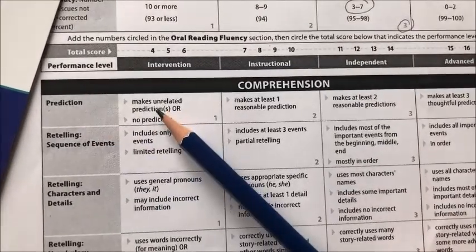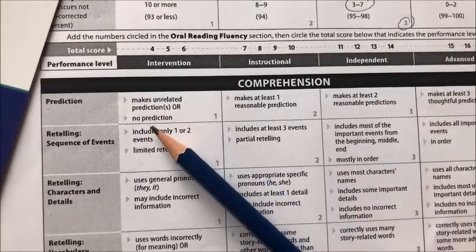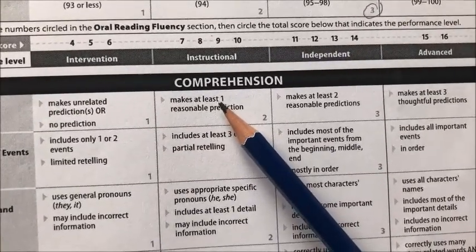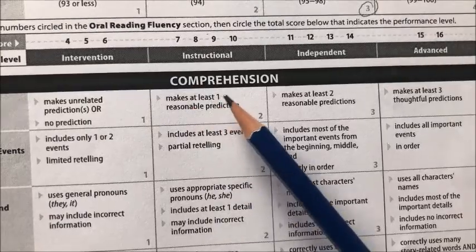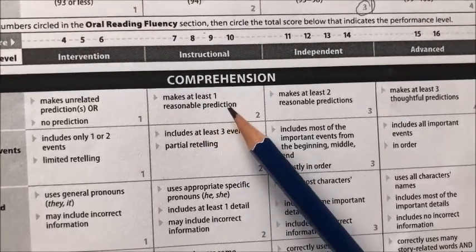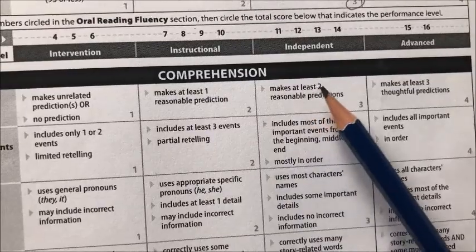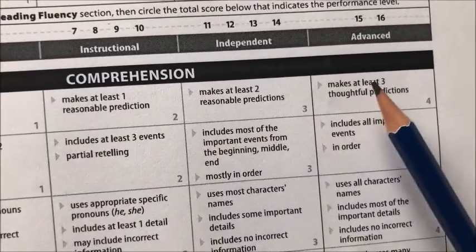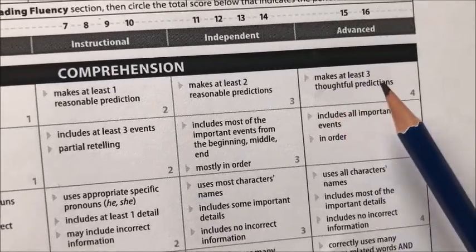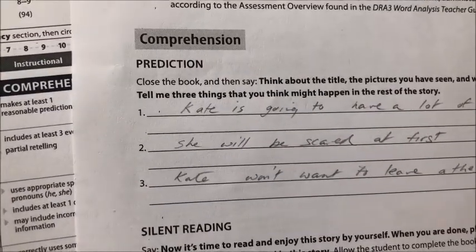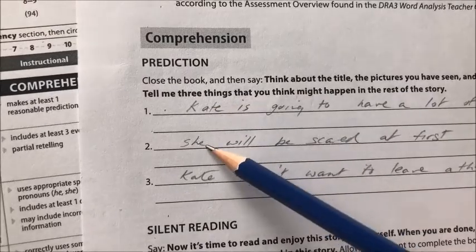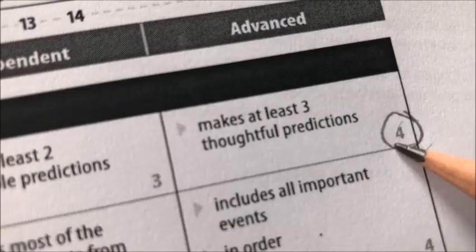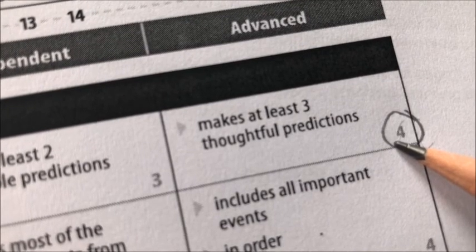The intervention level for prediction indicates that the student makes unrelated predictions or no predictions. Instructional has a student making at least one reasonable prediction. Independent makes at least two reasonable predictions, and advanced makes at least three thoughtful predictions. The student we assessed made three thoughtful predictions about the story, so I have circled the advanced level four for this skill.